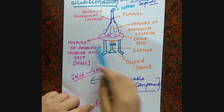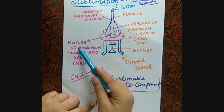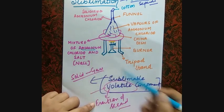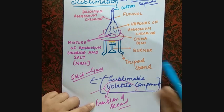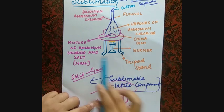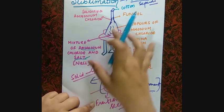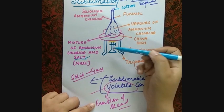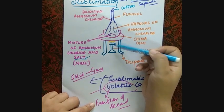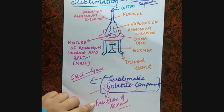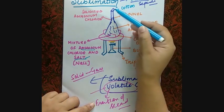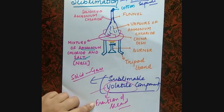Ammonium chloride is a sublimable volatile component — that is its nature. Salt is non-volatile. We have taken this mixture, placed it in the setup, and started heating with the burner. The funnel is plugged with cotton so that the fumes do not go out.